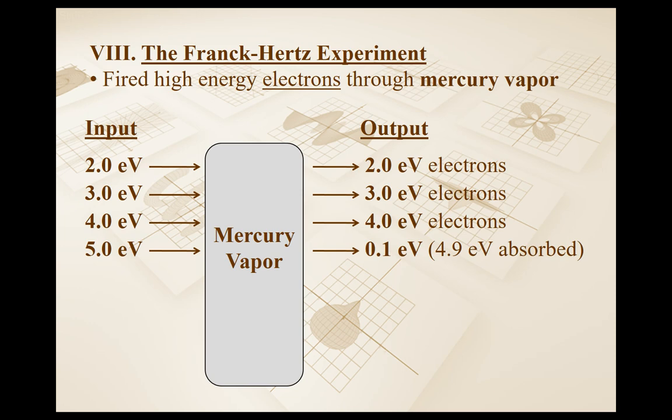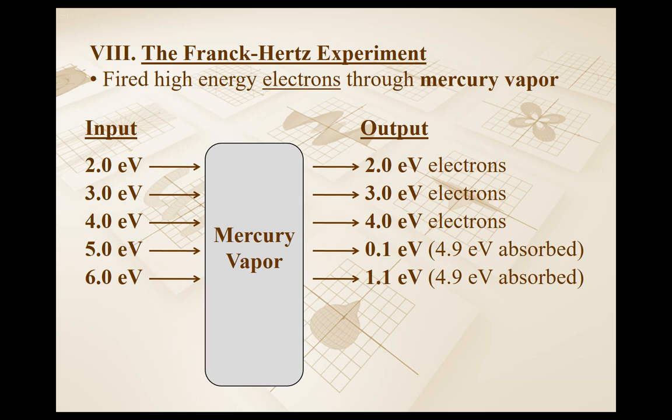How about 6.0 electron volts of kinetic energy for my electron through the mercury vapor? It comes back slower. If 6 electron volts kinetic energy goes in, I only have 1.1 coming out. 6.0 minus 1.1 is 4.9 being absorbed.